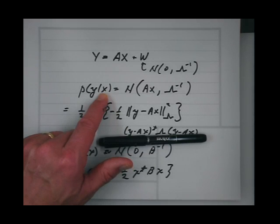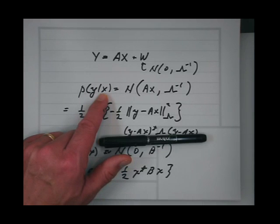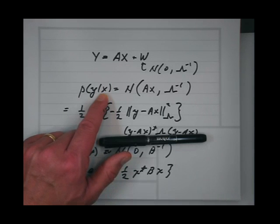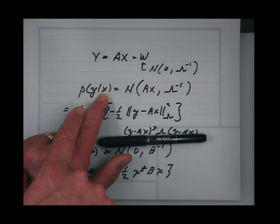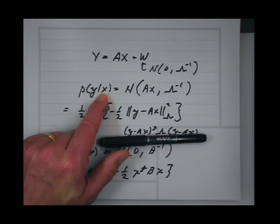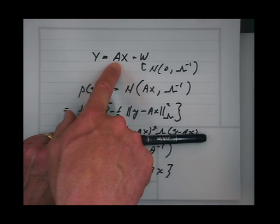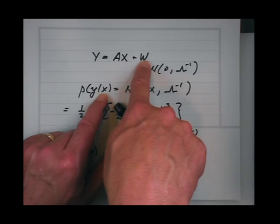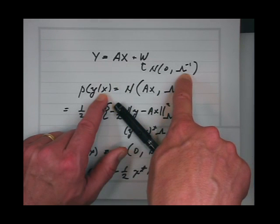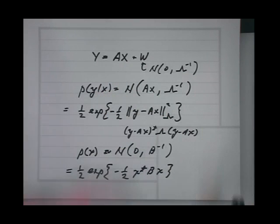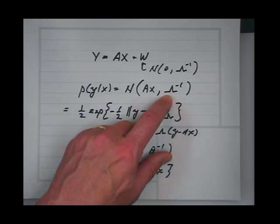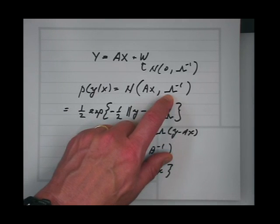The way to think about this — we could set this up formally and do all the calculations exactly. But the way to think about it is: I'm looking at the conditional distribution of y given x. If I know x, then what's the distribution of y? Well, if I know x, the mean of y is Ax. And then its variance about that point is the variance of w, which is lambda inverse. When I write the multivariate Gaussian distribution, I put the inverse variance in the expression, not the variance.